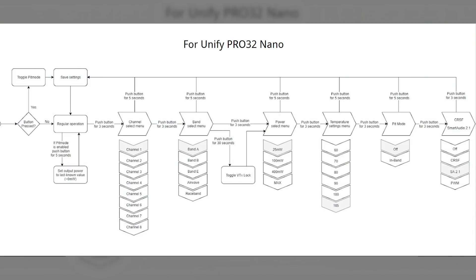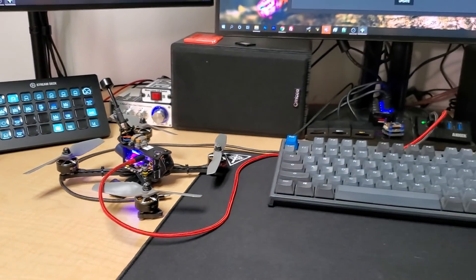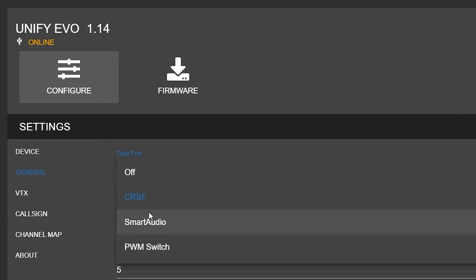There's one more thing you need to do: set the Unify receiver's data protocol to Crossfire instead of Smart Audio. They ship from the factory set to Smart Audio. Depending on your receiver, it may be a little annoying to change. This flowchart is on page 5 of the TBS Unify Pro 32 manual — I'll link it in the description. It shows that the sixth menu item is the data protocol option. If you have a Unify VTX with a USB port, just plug it into your computer, open TBS Agent X, and make the change there — much easier.